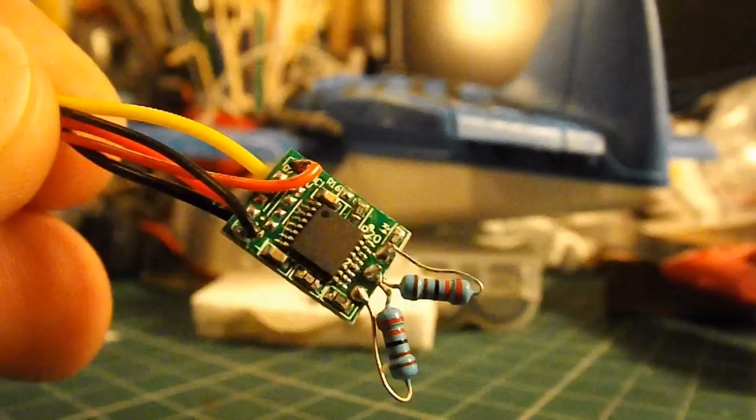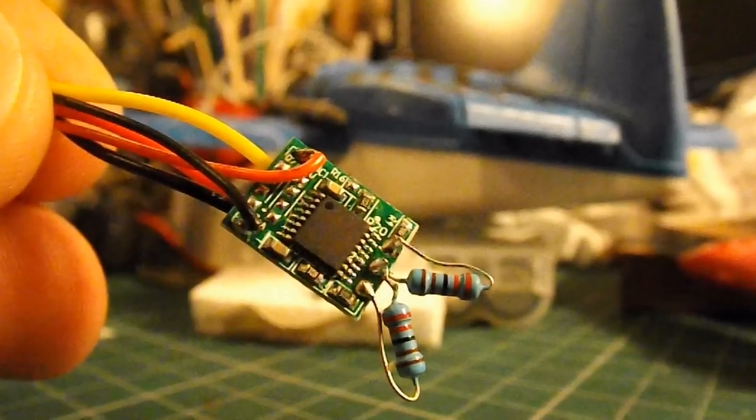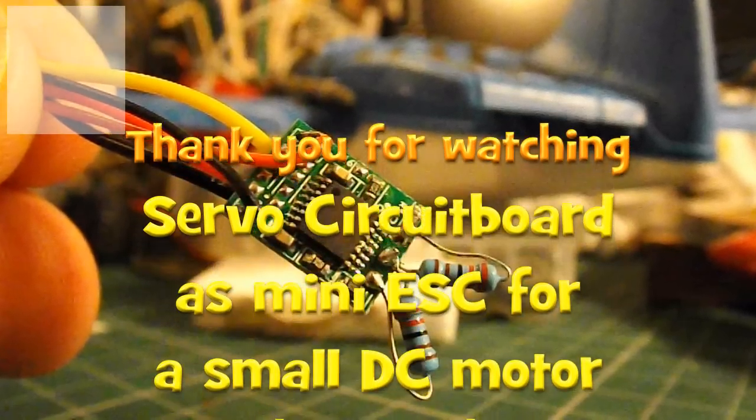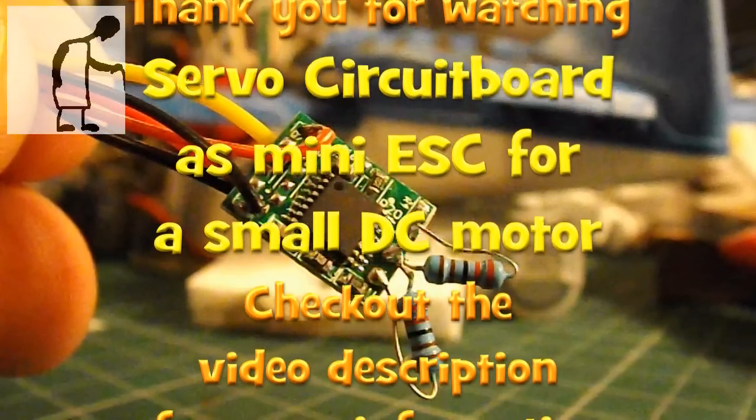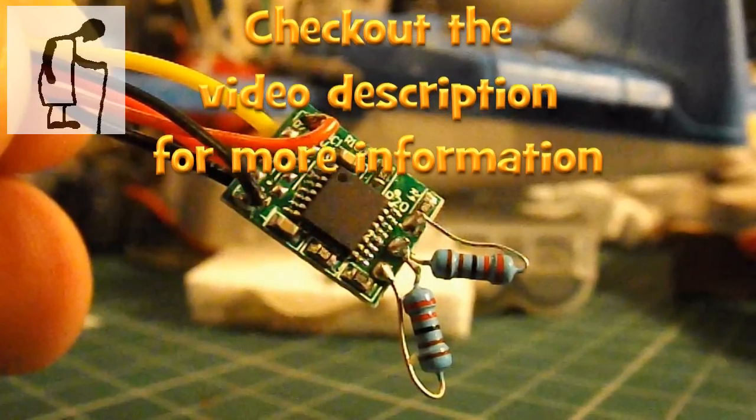So there we go. A radio controlled car using a servo circuit board as an ESC. Just a bit of fun - thought it might be interesting to try out.